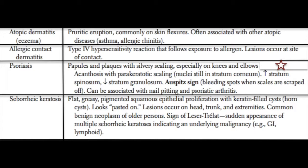Allergic contact dermatitis is a Type 4 hypersensitivity reaction, meaning it is T-cell mediated. Common causes include poison ivy, nickel allergies, and various other substances. We further group this into acute and chronic contact dermatitis. In acute contact dermatitis, such as from poison ivy, you typically see ulcers and vesicles, whereas in chronic dermatitis you see thickening, or chronic lichenification.